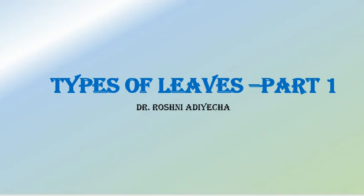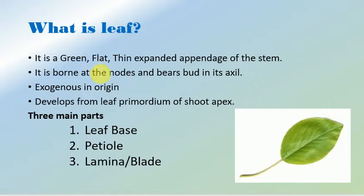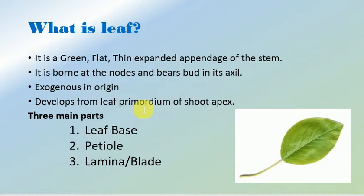In this video we will study types of leaves. A leaf is a green part of the plant — a flat, thin, and expanded appendage present on the stem. The leaf is always born at the nodes and bears a small bud in its axil, known as the axillary bud. Leaves are always exogenous in origin and develop from the leaf primordium of the shoot apex.